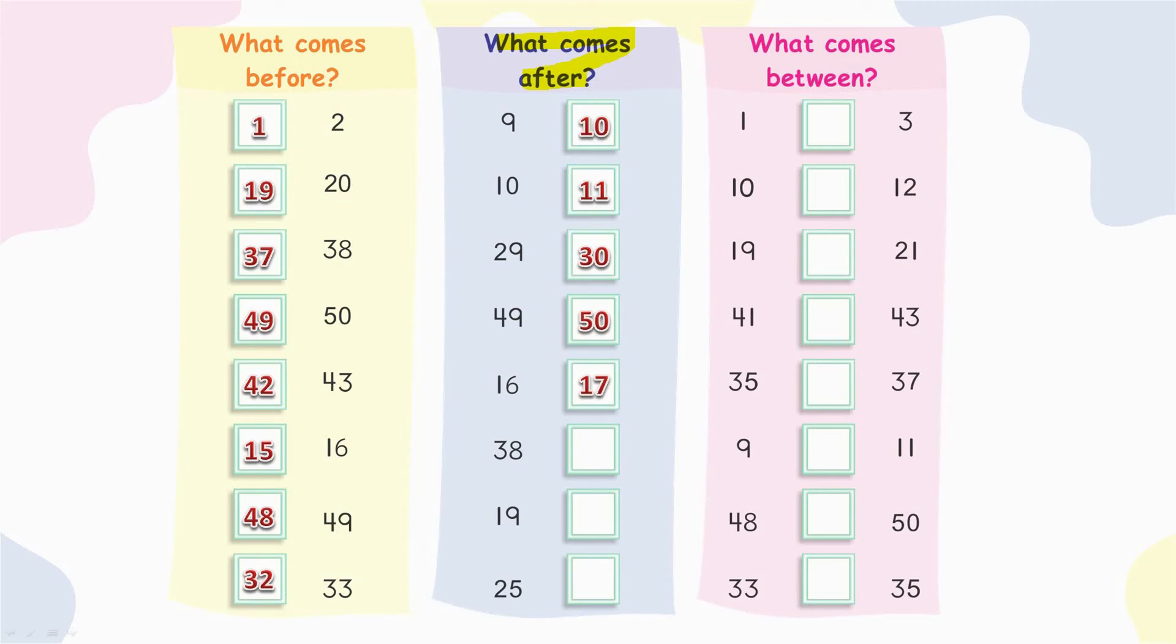What comes after thirty-eight? Thirty-nine. What comes after twenty-five? Twenty-six. Very good.